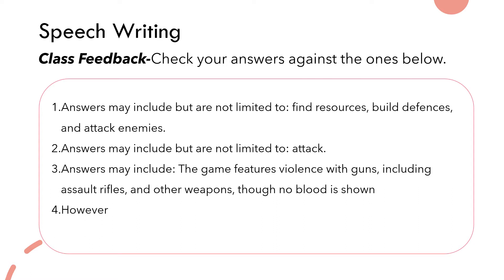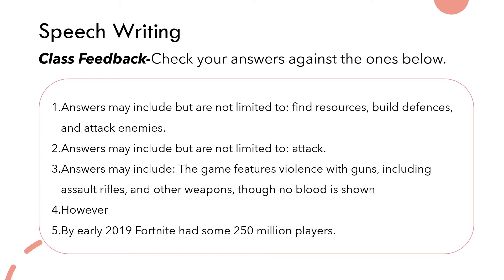Number four: a discourse marker that could be used is 'however' — a really good word to use if you want to present a balanced argument. And finally, number five: the statistic being used is 'by early 2019, Fortnite had some 250 million players.' A statistic is simply where we use numerical data in order to support an idea.